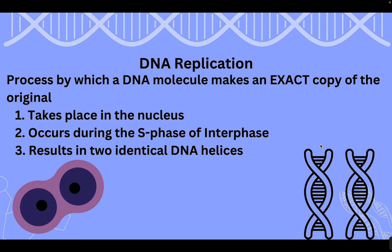Since DNA provides the instructions for cells, every time we need to make new cells via cell division, we need to make a copy of DNA — you need DNA for each cell you make. DNA replication is the process by which DNA makes an exact copy of the original strand. It takes place in the nucleus of eukaryotic cells during the S phase of interphase, which is prior to the cell actually dividing. The process results in two identical DNA helices.